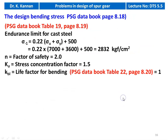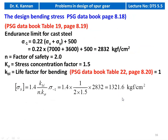Calculate design bending stress. All equations from table 8.19, page 8.19 — endurance limit for cast scheme. We assume casting process: σ₋₁ = 0.22 × (σu + σy) + 500 = 0.22 × (7,000 + 3,600) + 500 = 2,832 kgf/cm².